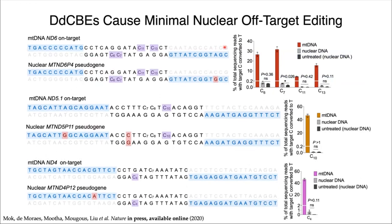The nuclear genome contains pseudogenes that bear great resemblance to some mitochondrial genes. Shown here are three examples of the nuclear pseudogenes and their mitochondrial counterparts, with nucleotide differences highlighted in red. Across the three tested nuclear pseudogenes, we did not observe significant nuclear off-target editing in cells treated with DdCBE, as shown by the very low gray bars.